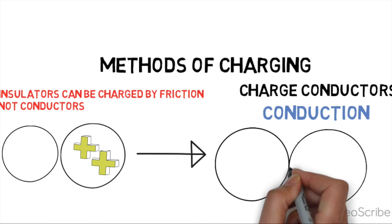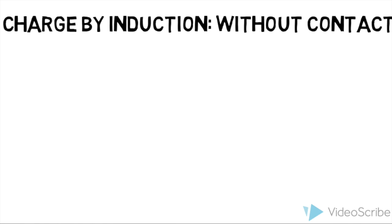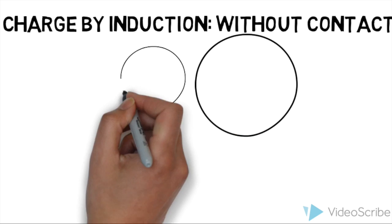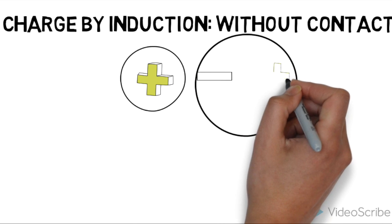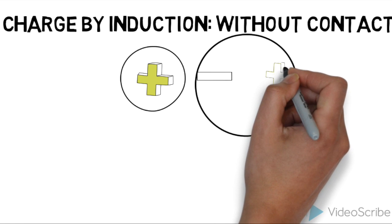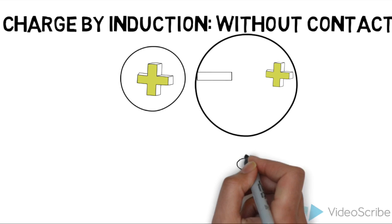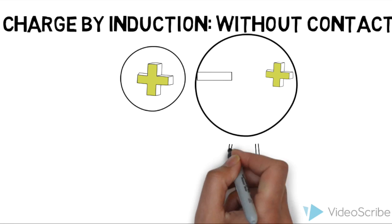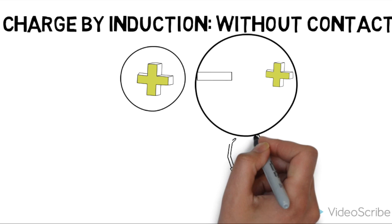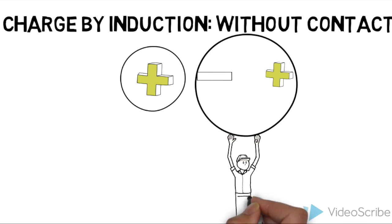Let's discuss another method called induction, charging without contact. If I bring a charged positive sphere near a neutral sphere without touching it, the negative charges, the electrons, move towards the sides of the sphere because negative charges attract positive charges. Positive charges repel positive charges, so the positive charges will stay furthest away. One side of the neutral sphere will become negatively charged and the other side of the neutral sphere will become positively charged, but the sphere itself is still neutral. This is called polarization.